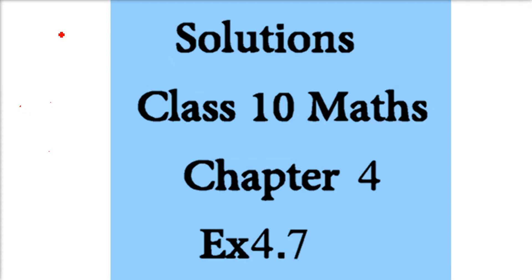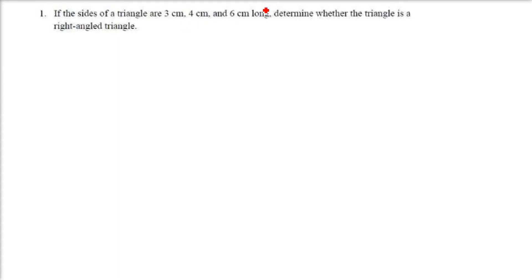We are taking Exercise 4.7 from RD Sharma Solutions, Class 10 Maths, Chapter 4. The questions are basically on Pythagoras theorem. You have to understand that if this is a triangle and one of the angles is 90 degrees, say this angle is 90 degrees.